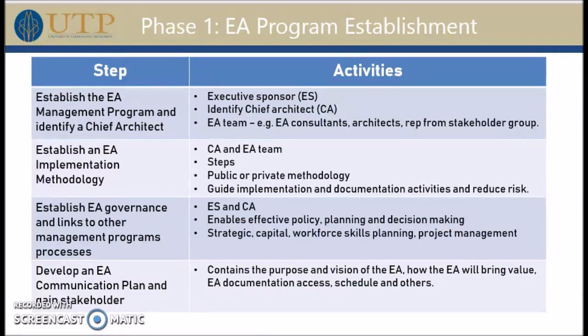Phase 1 is about EA program establishment. There are four steps in this phase. Step number one is establish the EA management program and identify a chief architect. Step number two is establish an EA implementation methodology. Step number three is establish governance and links to other management processes. And step number four, develop an EA communication plan and gain stakeholder buy-in.